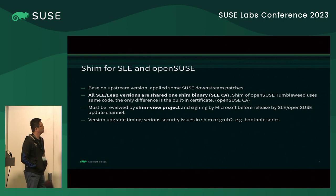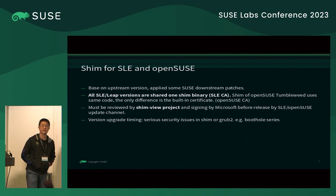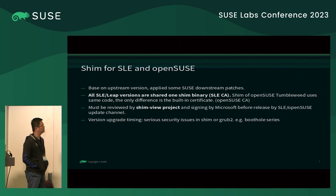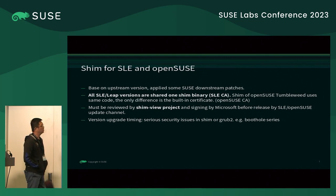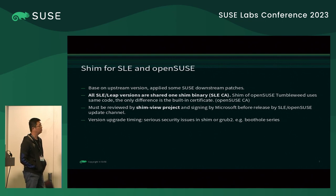SHIM is a project we use in SLES and openSUSE. We applied some SUSE downstream patches — not too many, only four — and we want to reduce that. SHIM is special: all SLES and Leap versions share one binary. The only difference is the built-in certificate — OpenSUSE Tumbleweed uses the built-in OpenSUSE CA, while SLES and Leap use the SLES CA. After closing the LibreGo project, Leap shares the SHIM with SLES.